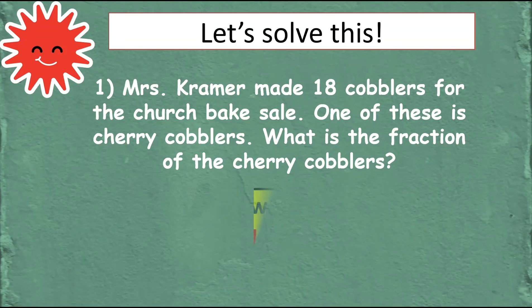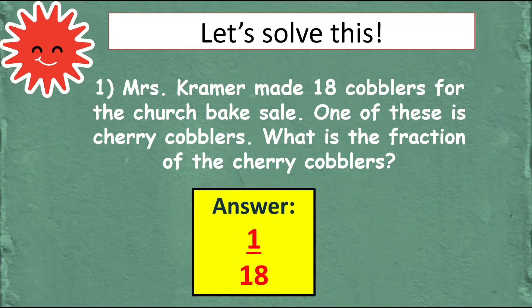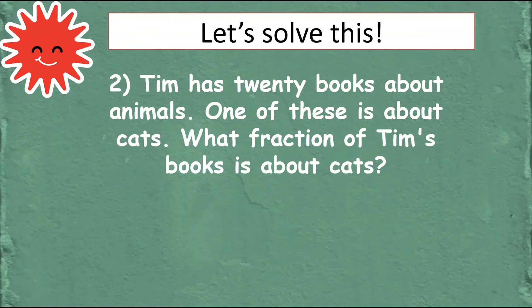Okay very good it's 1 eighteenth because there are 18 cobblers in all that's the denominator and then one there is one cherry cobbler.